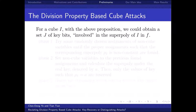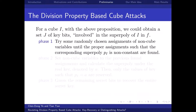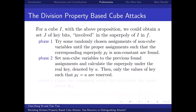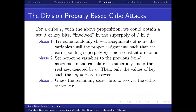In division property-based cube attacks, there are three steps to perform key recovery attacks. In the first phase, one should find the proper values of non-cube variables such that the corresponding superpoly is a non-constant polynomial. In the second phase, one should query the encryption oracle to obtain the value of the superpoly under the real key, so that wrong keys can be discarded. Finally, in the third phase, one exhausts the remaining secret key bits to recover the entire secret key.